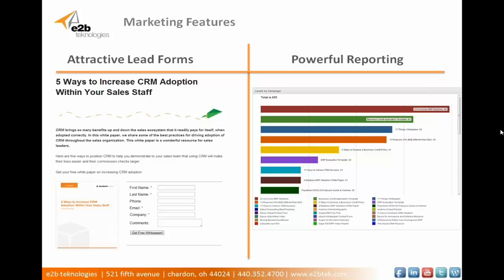Let's cover some of the marketing features. Sugar offers a lot of powerful marketing features that ACT really lacks. One of these is Sugar's lead forms. Sugar allows users to create attractive lead forms right out of the box. You can tie lead forms to marketing collateral like white papers, create fully customizable landing pages, or just make general contact forms for your website. When a prospect fills out one of these forms, the lead is automatically entered into your CRM database, tied to a campaign, and you have a notification sent to your inbox. Sugar's robust reporting allows you to track which marketing campaigns are generating the most leads, so you can tailor your future campaigns around the aspects that make your best campaigns most successful.